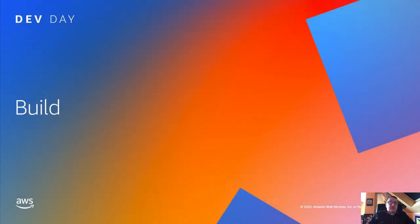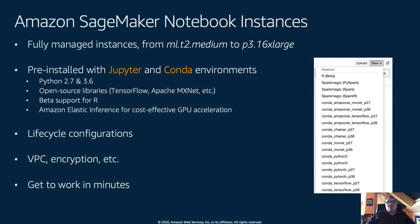Once you have a ready dataset, you can start building models. The first step is to inspect data and run preliminary analysis, and the preferred way to do this today is to use Jupyter notebooks. We built SageMaker notebook instances — managed instances pre-installed with everything you need: Jupyter and Conda environments for popular libraries, along with security features like VPC support and storage encryption. You can literally get to work in minutes.